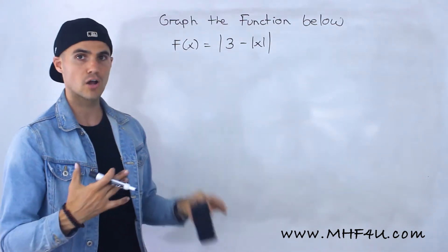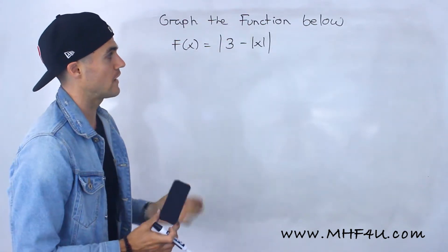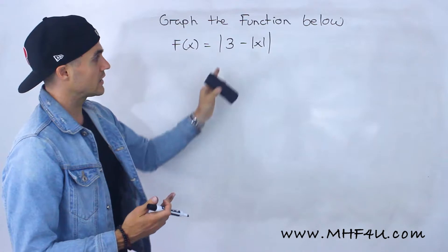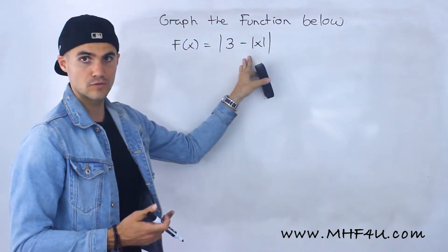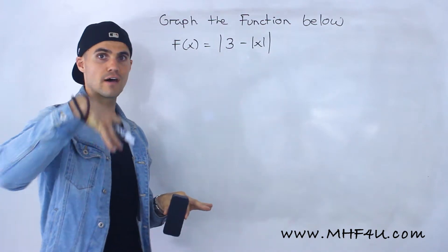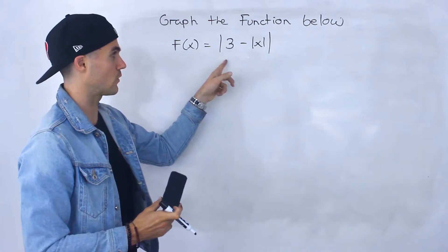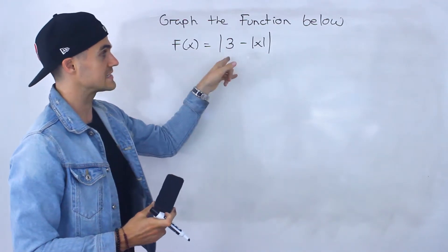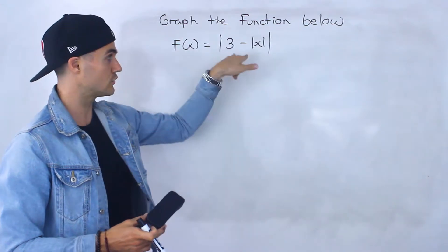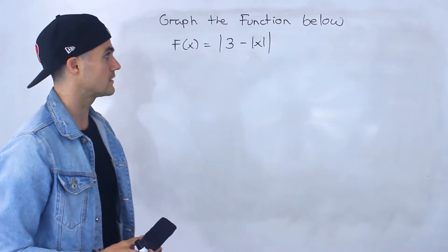This is kind of a complex function. Notice we have an absolute value within another absolute value. One way to graph this is to graph 3 minus the absolute value of x, then reflect all of the negative y values to positive y values. That method is going to be fairly easy for this one. Or we could convert it to a piecewise function, which is going to be fairly difficult. I'll show you how to do it at the end.